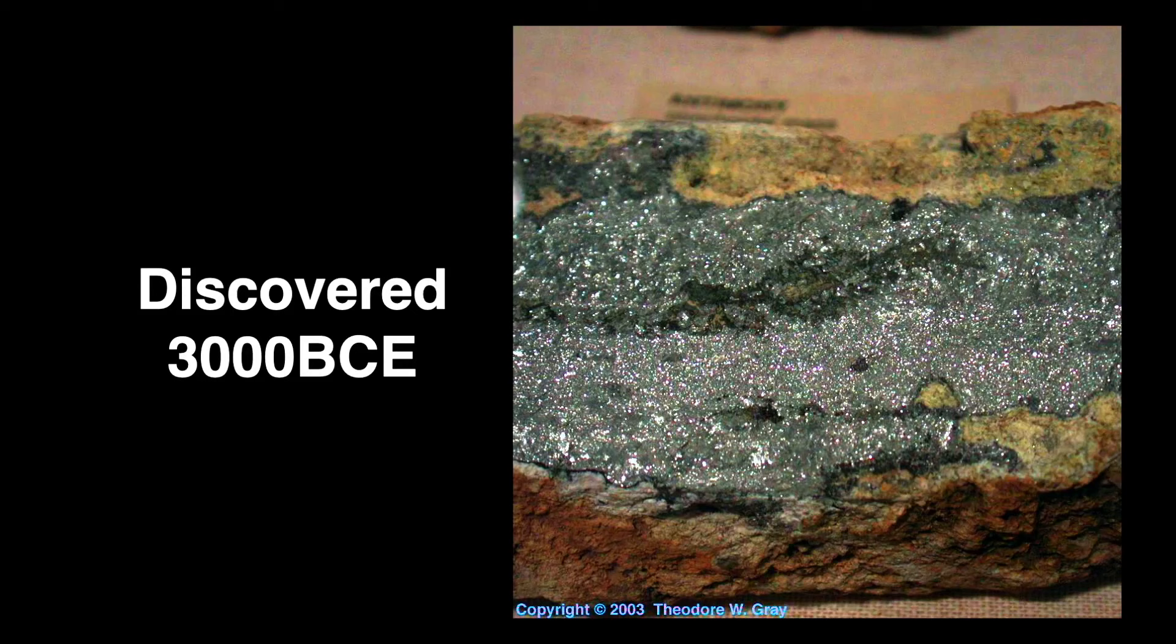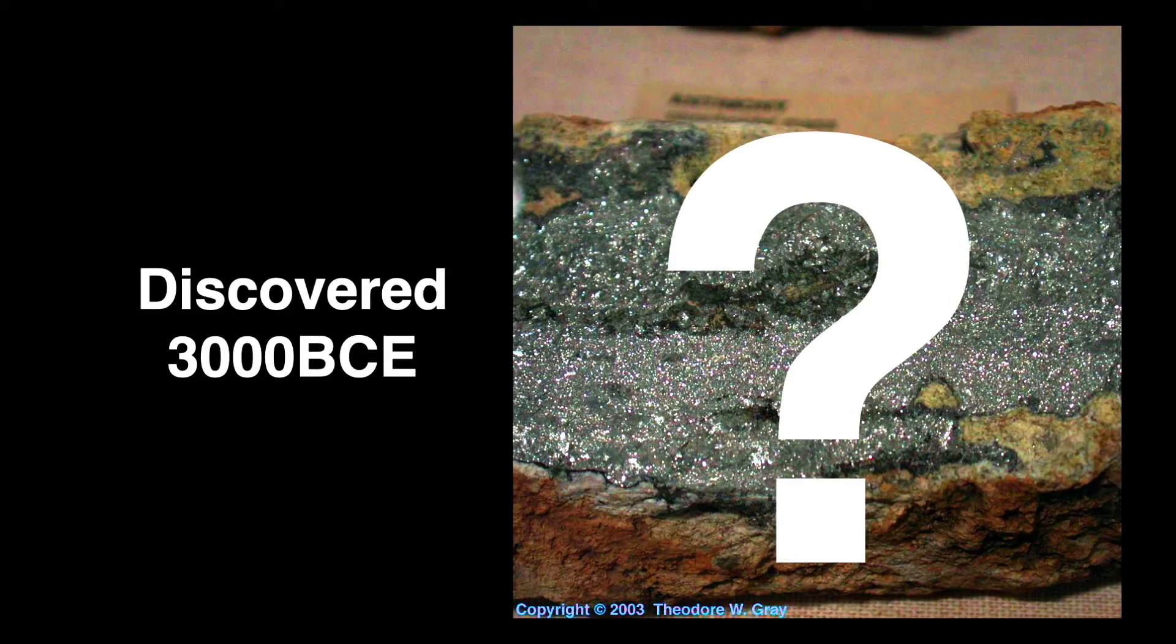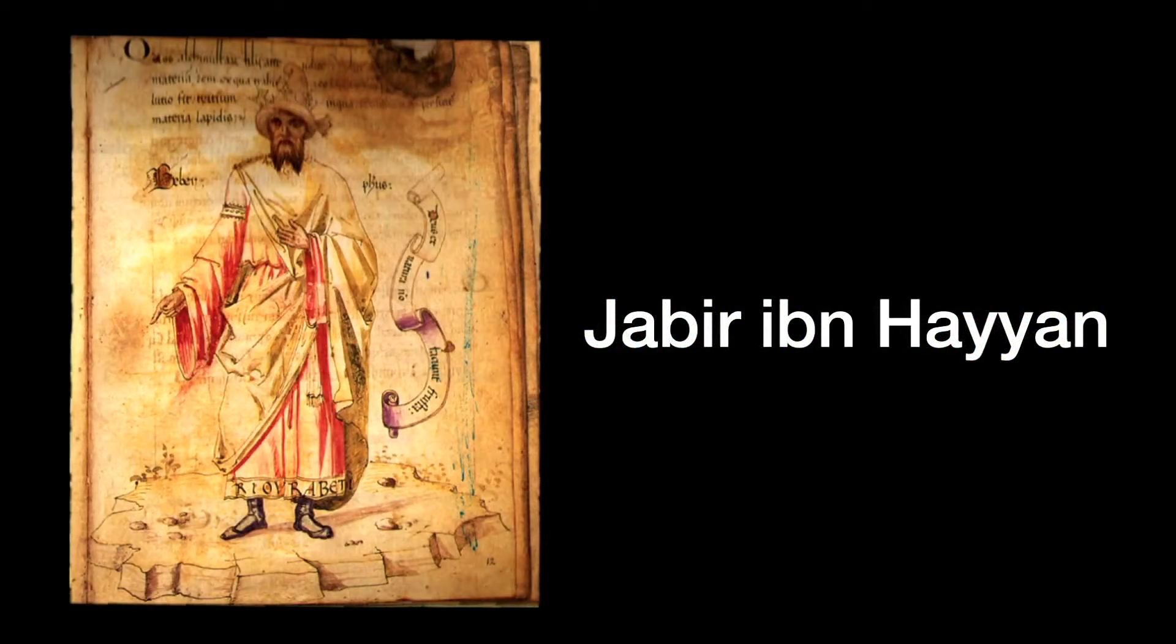While antimony does occur natively, as you see in this sample from the Harvard Museum of Natural History, we have no idea who first discovered antimony, but it may have been found as early as 3000 BCE. Antimony ore was quite common. Jabir ibn Hayyan, born in what is now Iran, is considered the father of chemistry. He's believed to be the first person to have refined metallic antimony.